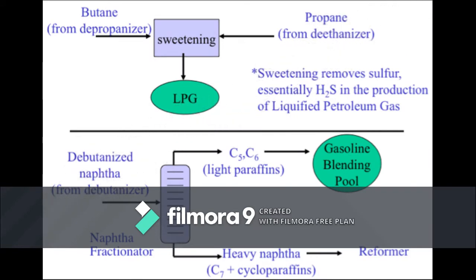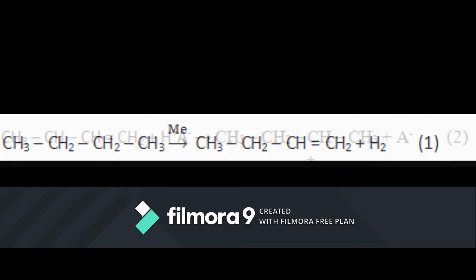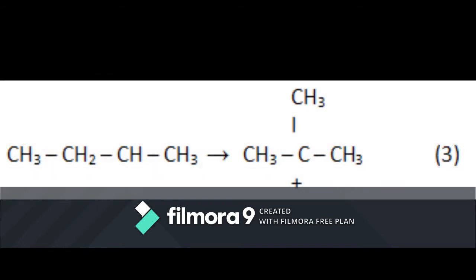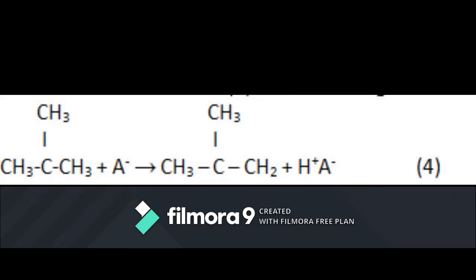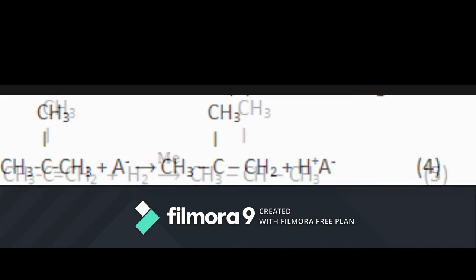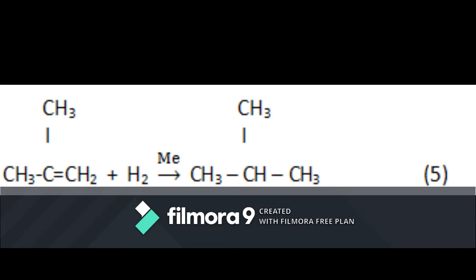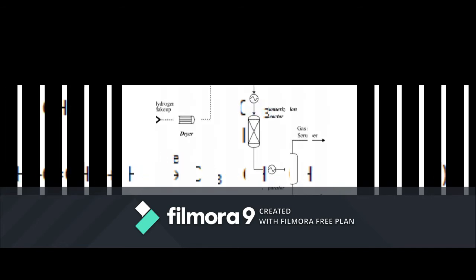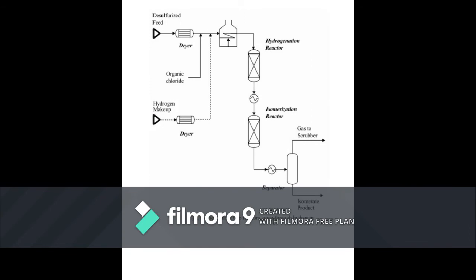The isomerization process is compared with another well-known refinery process called the catalytic reforming process. Isomerization converts normal butane, normal pentane, and normal hexane into their respective isoparaffins of substantially higher octane number. The straight-chain paraffins are converted to their branched-chain counterparts whose component atoms are the same but are arranged in a different geometric structure. Isomerization is similar to catalytic reforming in that the hydrocarbon molecules are rearranged, but unlike catalytic reforming, isomerization just converts normal paraffins to isoparaffins.